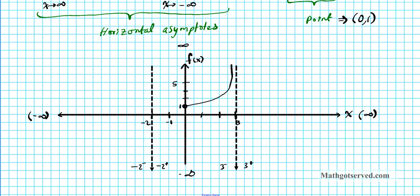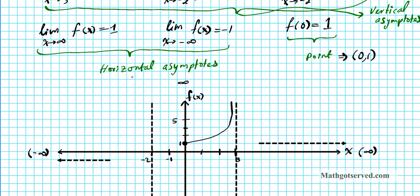Towards the right side we have a horizontal asymptote at y equals 1. As the function goes towards the end, it will be approaching this horizontal asymptote. On the left-hand side, there is a horizontal asymptote at negative 1. On the right side the asymptote is 1, and on the left side it is negative 1. If they were the same, I would just make one asymptote across the entire coordinate system, but since they are different I kept them to their respective areas.